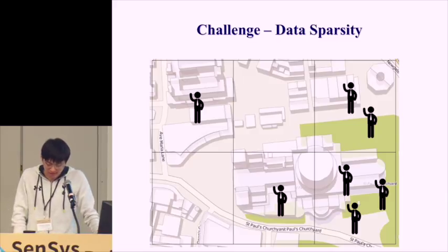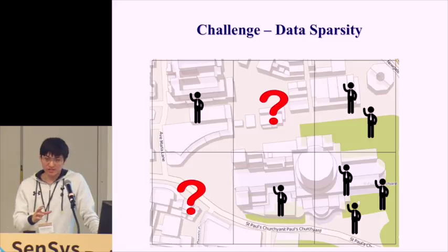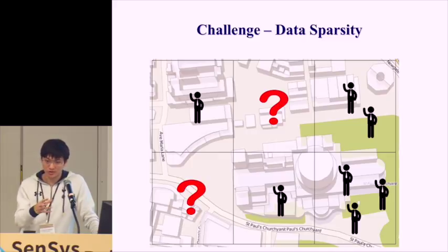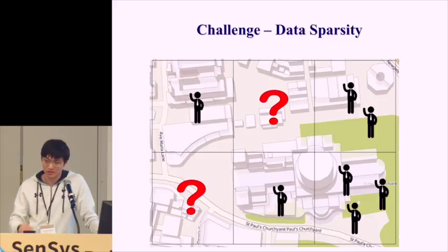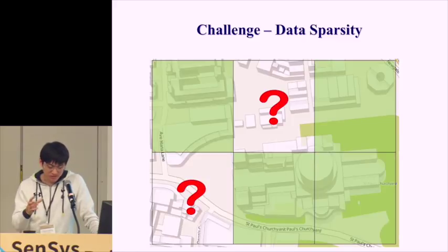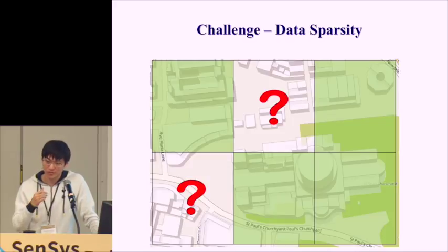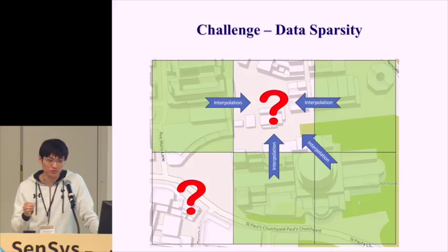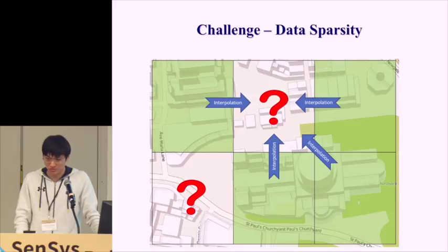Now let's look at the sparsity problem. For locations without any user observations, we can exploit similarity information between entities — for example, geographical distance — assuming neighboring entities have similar values. For entities with user observations, we can estimate values using a simple average or truth discovery methods. Then we can use interpolation to fill in entities without user observations.